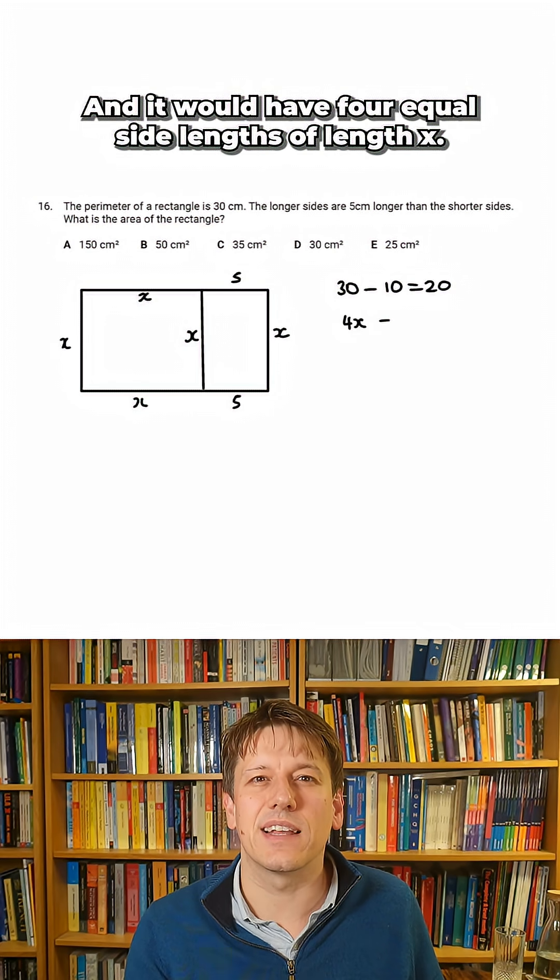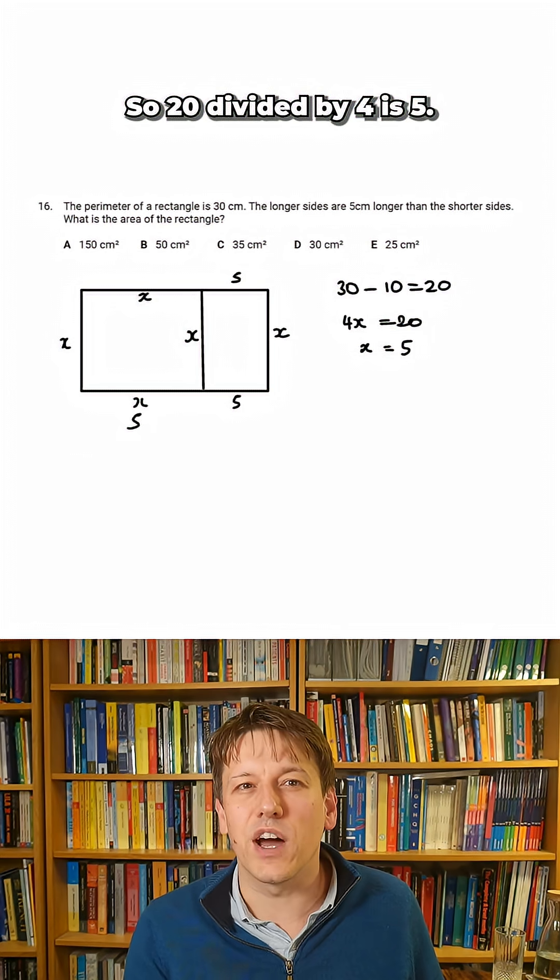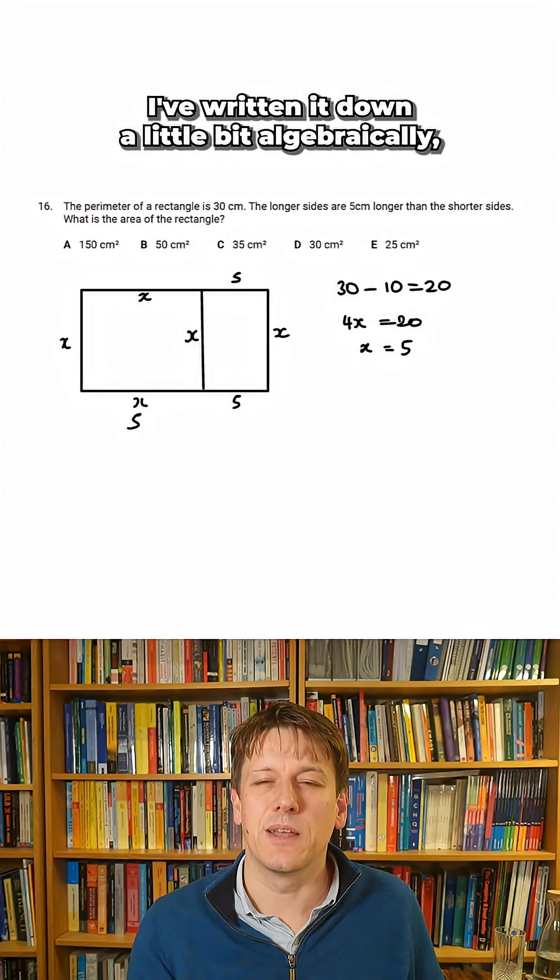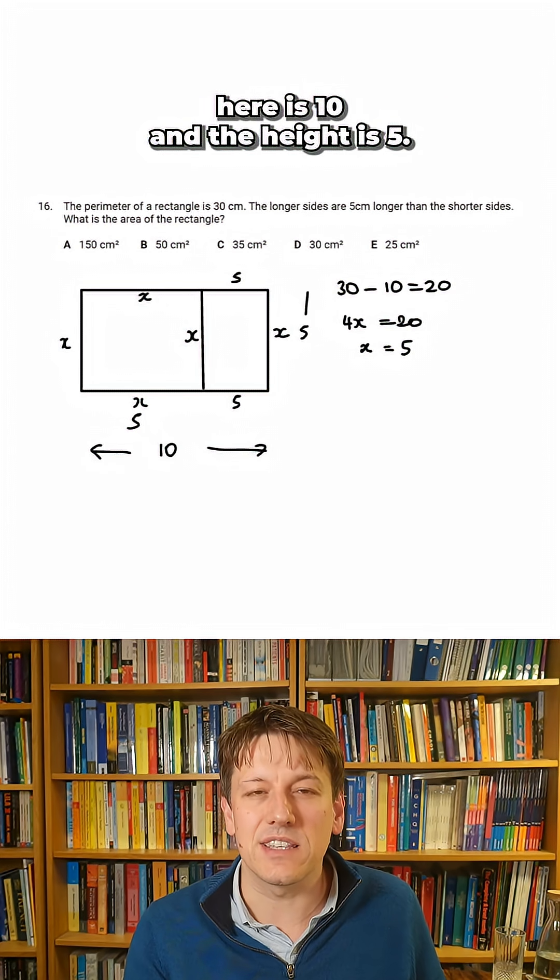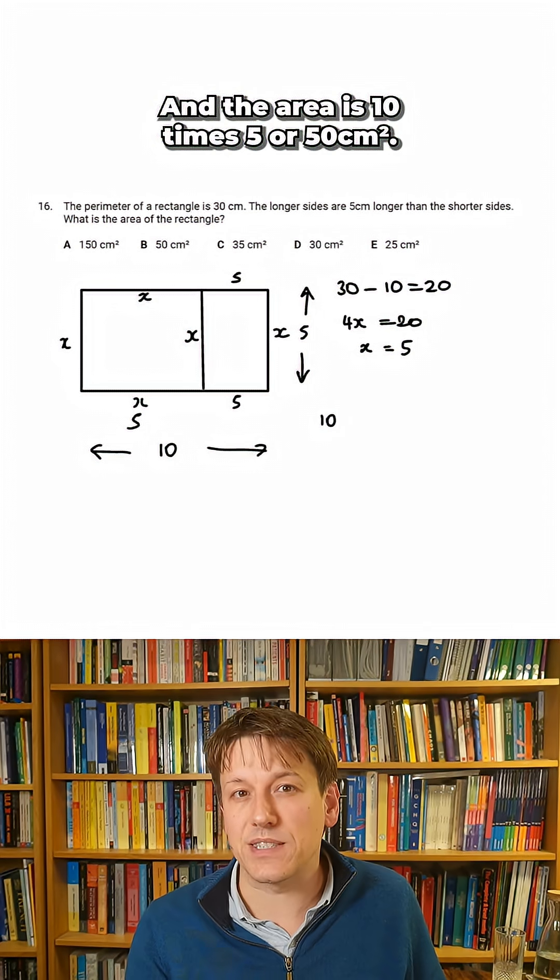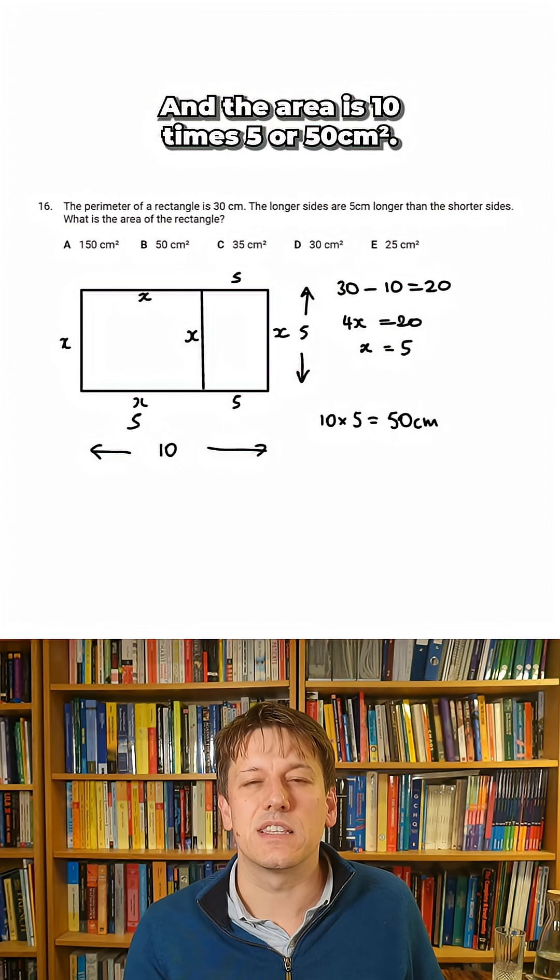and it would have four equal side lengths of length X. So 20 divided by 4 is 5. I've written it down a little bit algebraically, but you don't strictly need it here. So that means that the base here is 10 and the height is 5, and the area is 10 times 5, or 50 centimeters squared.